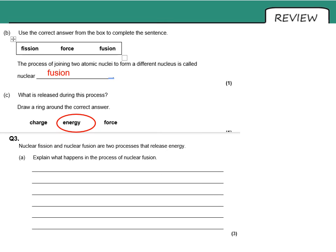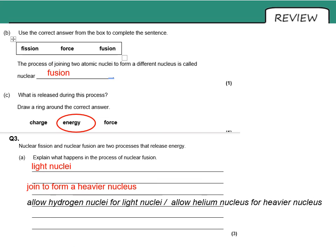Question three, three marks explain what happens in the process of fusion. Light nuclei join to form a heavier nucleus. That's two marks. You could say hydrogen nuclei and we could say a helium nucleus for the heavier. You can say what exactly what they are if you wish to. If this is a four mark question, I would expect that we might have to give an example rather than the general term.